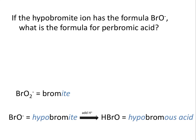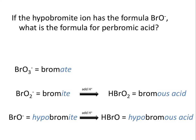Following the rules for naming polyatomic oxyanions: if BrO⁻ is hypobromite, then BrO₂⁻ is bromite. When we add enough hydrogen ions to make it an acid, HBrO₂ is given the name bromous acid, changing the -ITE ending to -US. Continuing in our series, the oxyanion BrO₃⁻ is called bromate, and so the corresponding acid would be bromic acid, changing the -ATE ending to -IC.